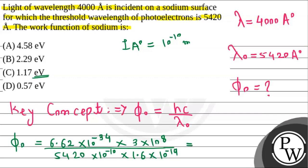After dividing, we get the work function as 2.29 electron volt. This is our required answer for this question, which we found using the formula of work function.